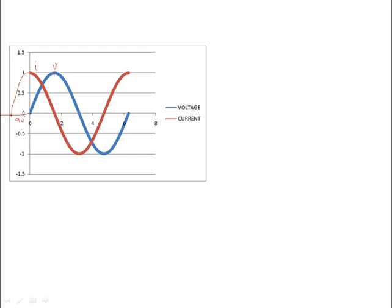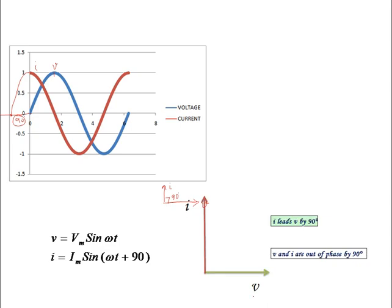The leading quantity is 90 degrees. That is why the equations are given as V equal to Vm sin omega t and I equal to Im sin(omega t + 90°). Voltage is always our reference. The current phasor leads by exactly 90 degrees. Here, current is leading the voltage by an angle of exactly 90 degrees — a very very important concept.